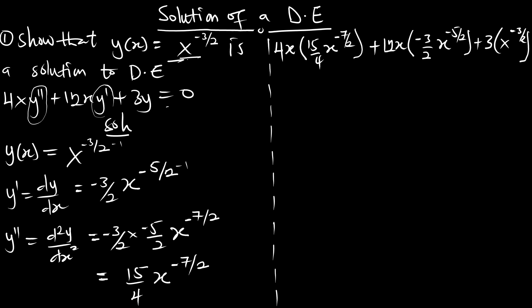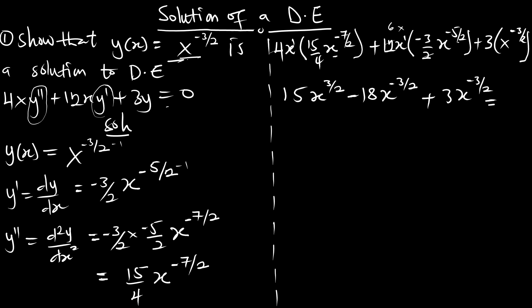Simplifying: the 4 and 4 cancel, giving us 15x^(-5/2). The second term: 4 times -3/2 gives -6, and multiplying x · x^(-5/2) gives x^(-3/2), so that term is -6x^(-3/2). Wait — simplifying further we get 15x^(-5/2) ... then -18x^(-3/2) plus 3x^(-3/2). Actually collecting the x^(-3/2) terms: -18 + 3 = -15... and the final result: 15 - 15 = 0, or equivalently 15 + 3 - 18 = 0.